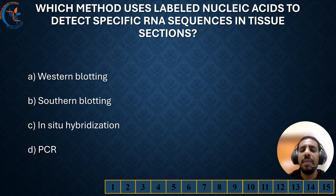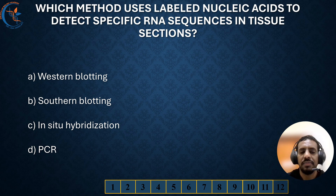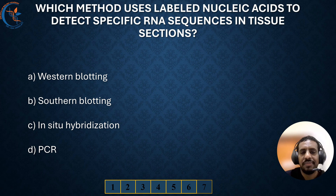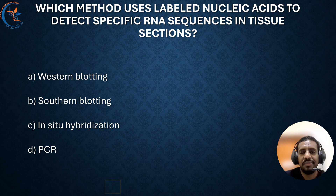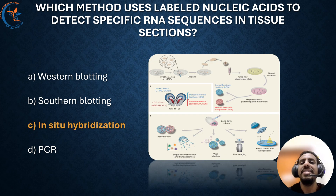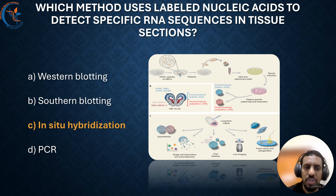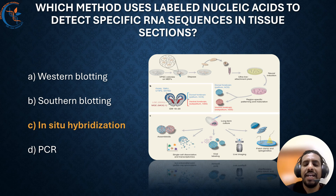Which method uses labeled nucleic acid to detect specific RNA sequences in tissue sections? The correct answer is in-situ hybridization. In-situ hybridization helps locate whether certain genes are being expressed in cells or tissues by binding a labeled nucleic acid probe to its complementary RNA sequence.